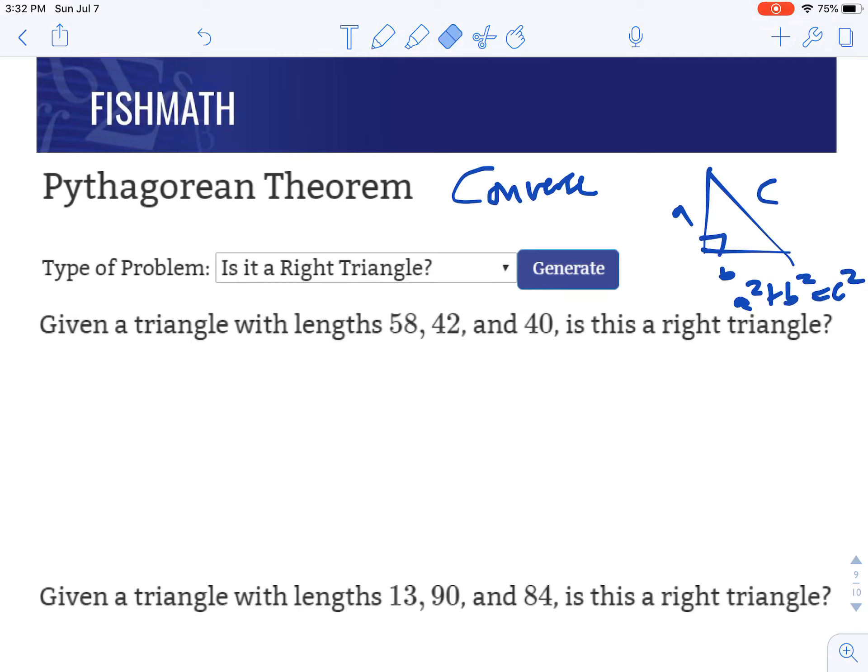The converse flips that. If a squared plus b squared equals c squared, then it's a right triangle. It's the opposite. Instead of saying it's a right triangle, we can use a formula. It's saying if the formula works, then it's a right triangle.